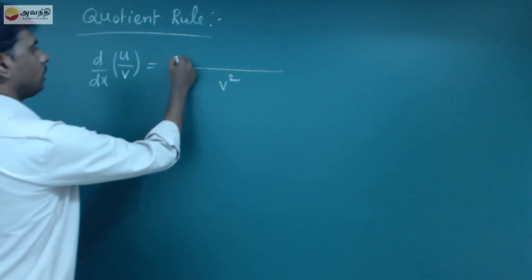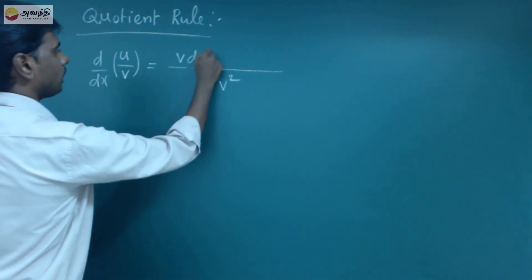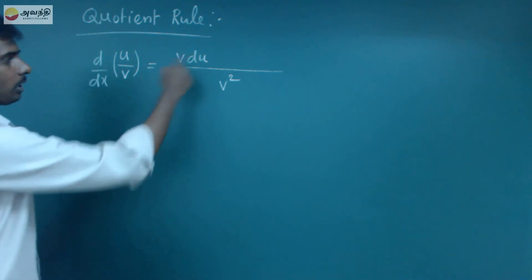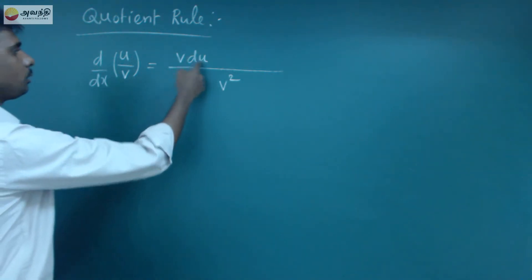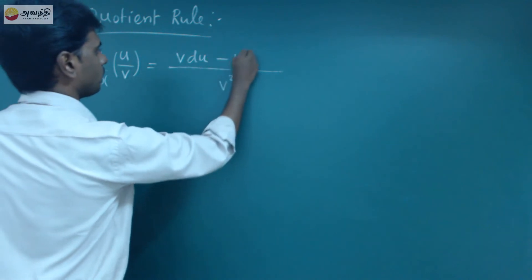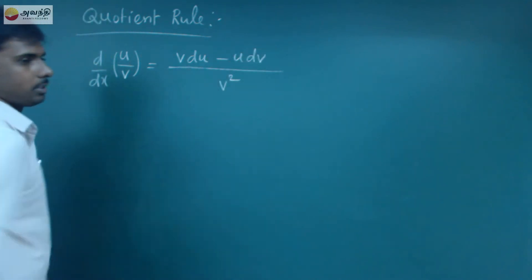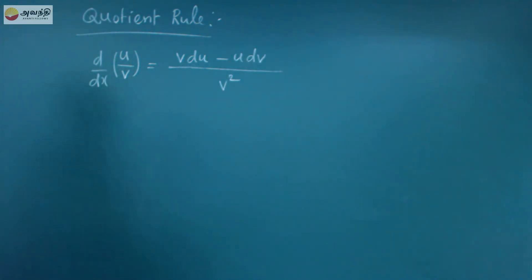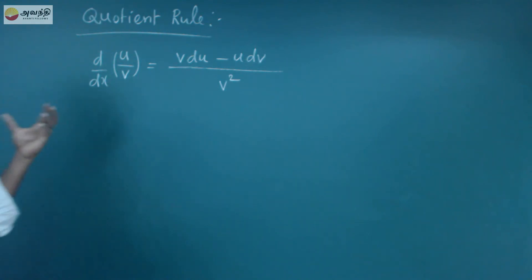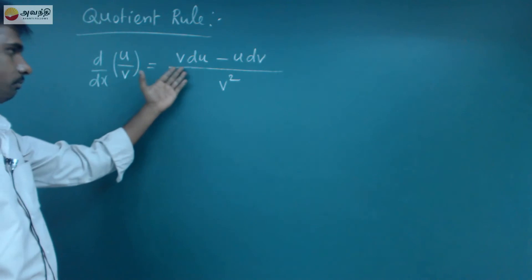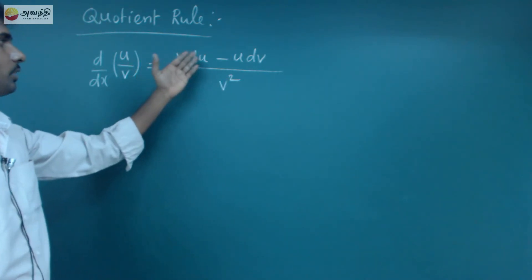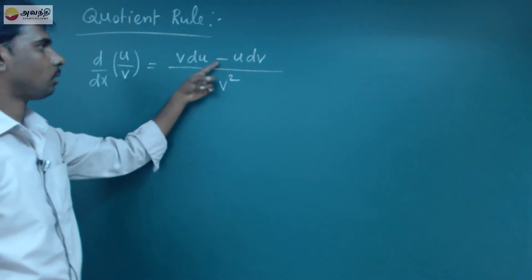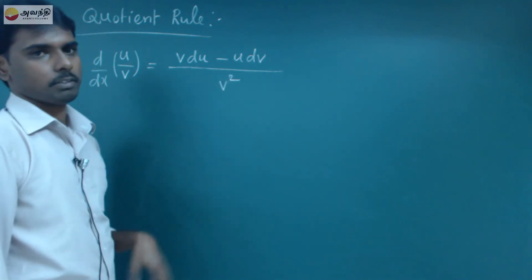The quotient rule formula: the differentiation of u by v equals v squared in the denominator. First, v times the differentiation of u, then minus u times the differentiation of v. So if you change this order, you will get a different answer — so we must follow this formula.